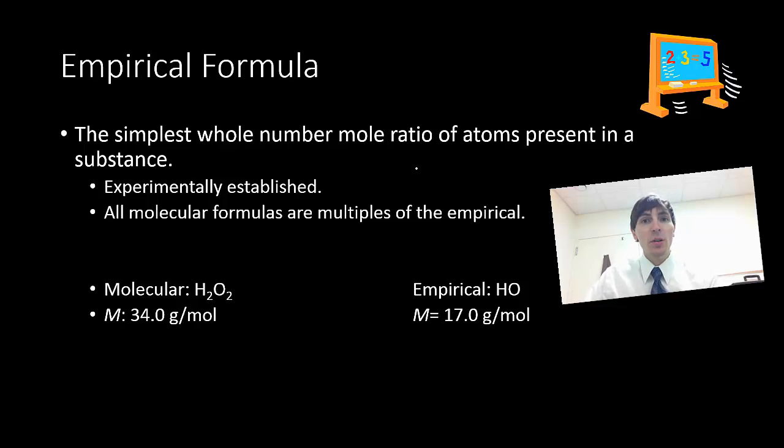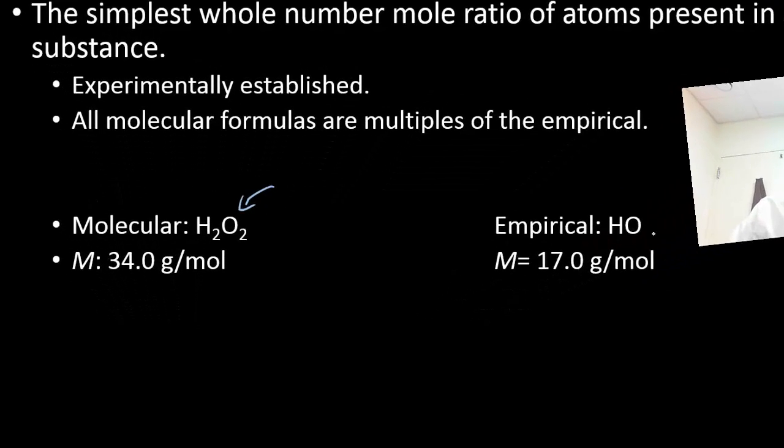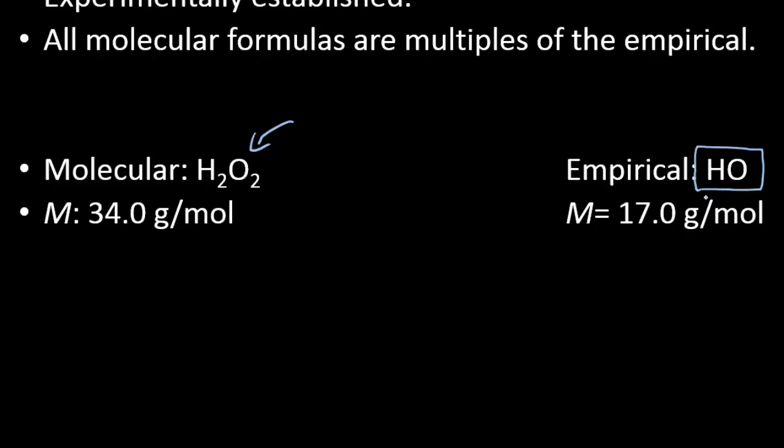It's the simplest whole number ratio of atoms present in a substance. And this is going to be something that is experimentally established. And all compounds that have some molecular formula are going to be multiple of this empirical or simplest formula. A good example is a compound like hydrogen peroxide.